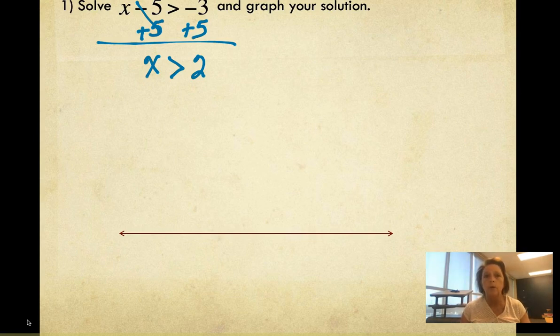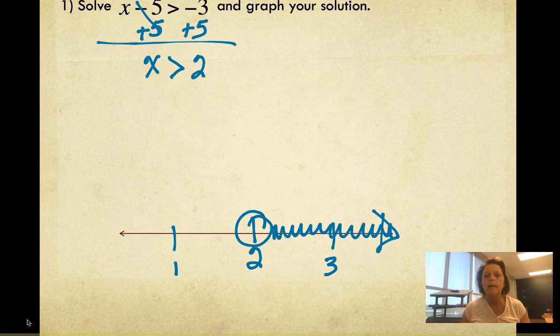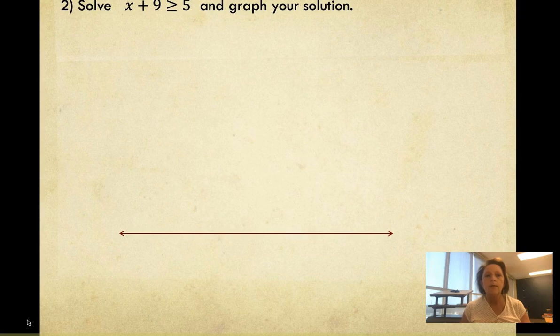Now remember when you graph an inequality, you put the number that you're working with in the middle and then you put a number on each side. This is an open circle because it doesn't have the equal sign underneath, and we are going to shade to the right, which indicates greater than.